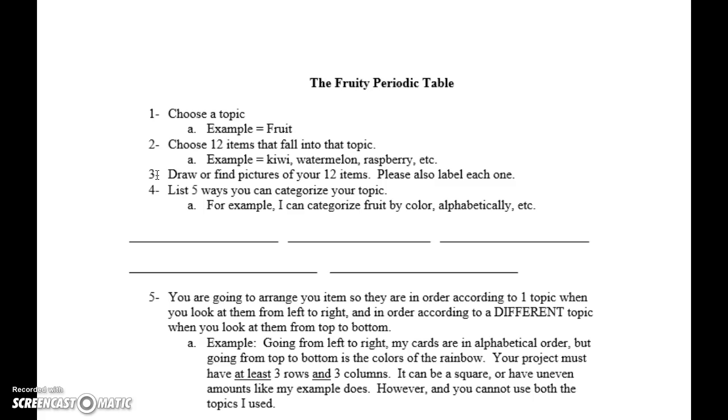Then you're going to draw or find pictures of your 12 items. Please also label each one. Now, obviously, if I had a picture of a raspberry, I would assume living in Minnesota, all of you know what that is. But there are some fruit, maybe like a lychee, that you wouldn't know. Well, in your topic, there might be some things that you think I would know, but I don't. So be sure to label all of your drawings or pictures. Now, I cannot draw at all. I would totally just Google pictures and do it that way. Some of you are amazing artists, but I don't want you to spend 10 hours on this. So nice little sketches is good enough.